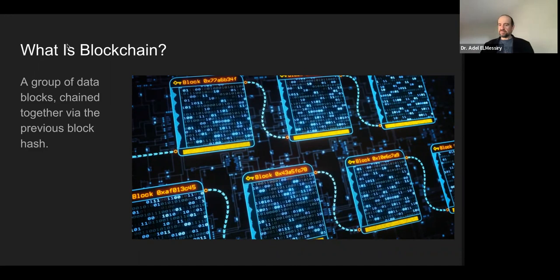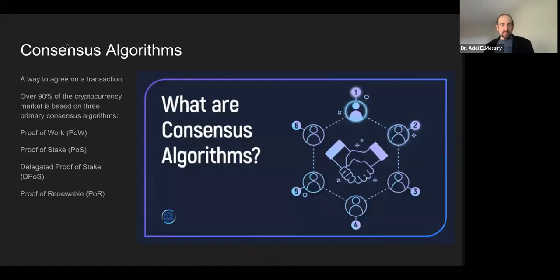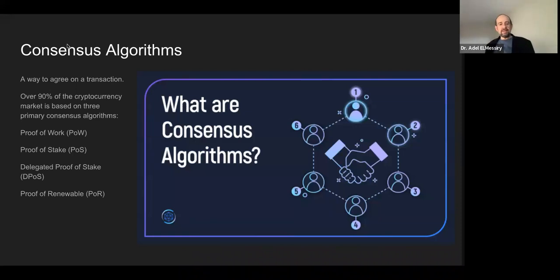That's what we call immutability — it cannot be changed, because once it is written, you cannot really change what has been written. It's written in stone. That is really brilliant. Then, how do we agree around that if you had only one record of them?